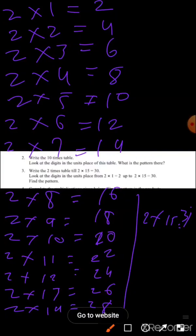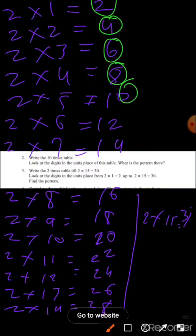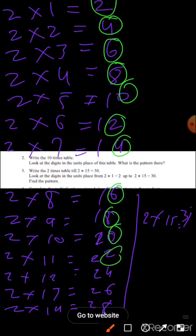So the pattern in this table: in the unit place you will get two, four, six, eight, zero — again two, four, six, eight, zero — again two, four, six, eight, zero. So in the table of two, in the unit place you will get the numbers two, four, six, eight, zero. This is the pattern in the table of two. Copy question number three, write the table and use different colors to circle the patterns.